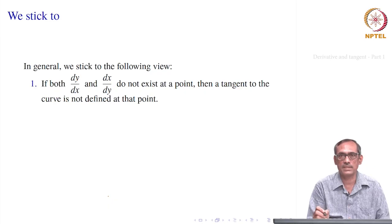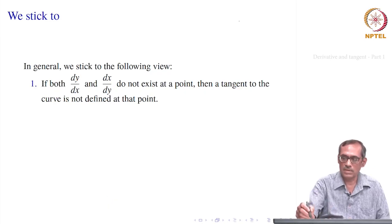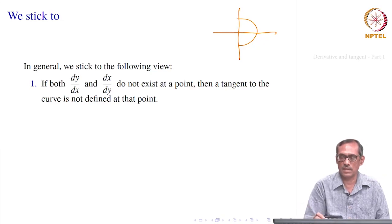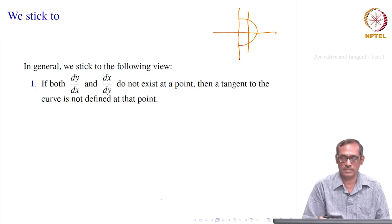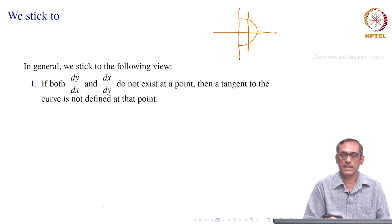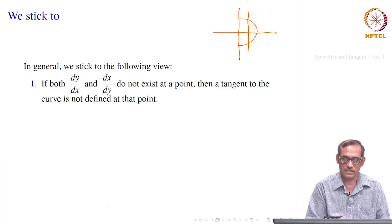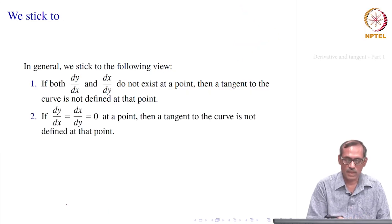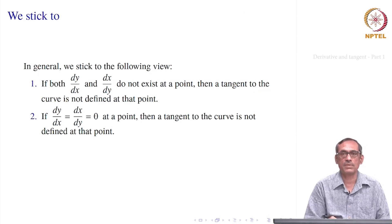We consider both dy/dx and dx/dy. If neither exists at a point, then the tangent to the curve is not defined at that point. Also, if both of them are 0 at a point, then the tangent is also not defined, as we have seen for the vertical tangent case y = f(x).